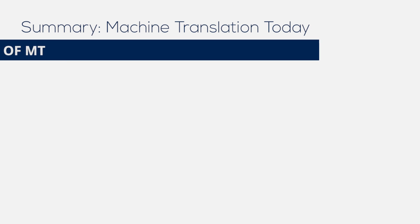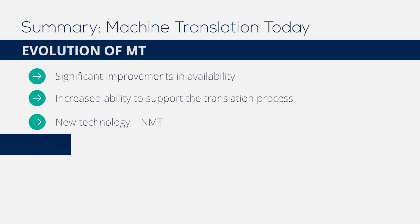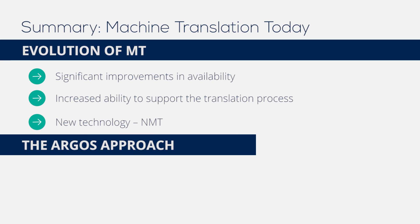With technology advances, MT has evolved with significant improvements in its availability and its ability to support the traditional translation process. MT has enabled greater efficiencies in the traditional translation process with productivity gains as high as 130% for certain languages. At Argos, we share best practices and content creation with our clients to improve the quality of source content and in turn increase the probability of developing a more effective engine for translating their content with machine translation.